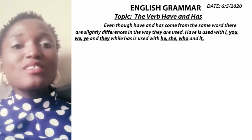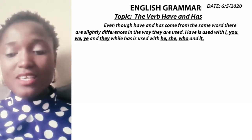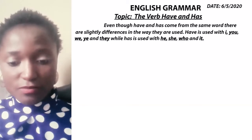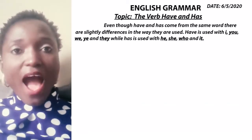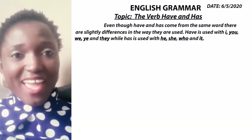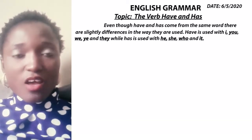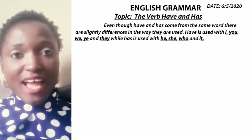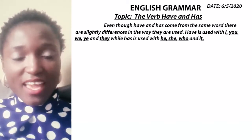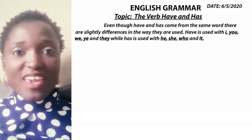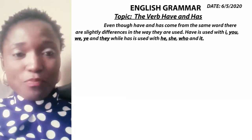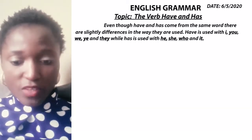A pronoun is a word we use instead of a noun. And what is a noun? A noun is a name of any person, animal, place, or thing. For example, Aretey is a boy — Aretey is a noun. Instead of saying Aretey is a boy, I will change Aretey to he. He is a boy. He there represents my pronoun.